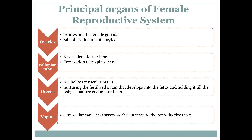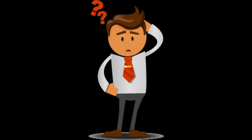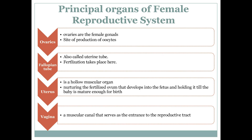A female body has two ovaries — right and left. Ovaries are the female gonads and the site of production of oocytes. We will discuss oocytes in more detail when we cover physiology.